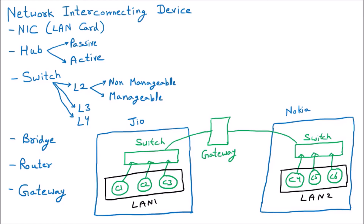Gateway is the LAN or MAN device because LAN and MAN use the same devices. So gateway is used to connect multiple LANs. The second important thing about the gateway is that it provides security — and that is the major thing. By the name we can see: gateway means there is a way, and on that way there is some kind of gate present.